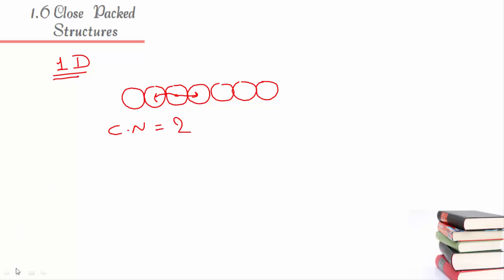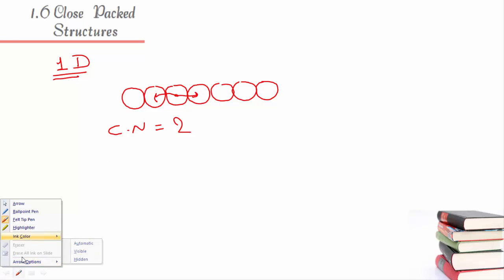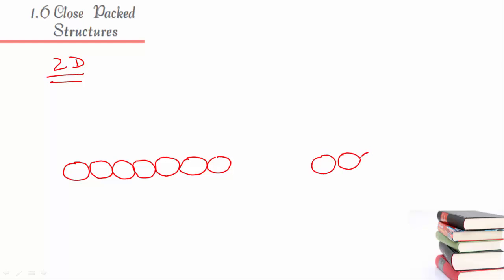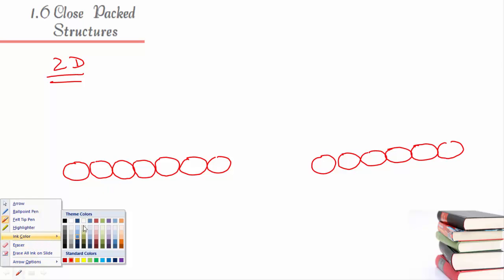Now, if we talk about two dimensions — arranging in two dimensions — what will happen? The first layer will be the same. For the second layer, there are two different possibilities, which is why I am drawing two times.